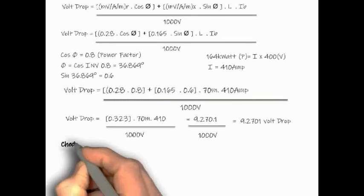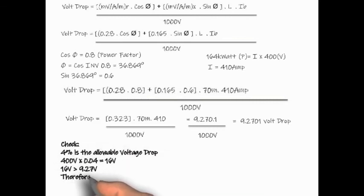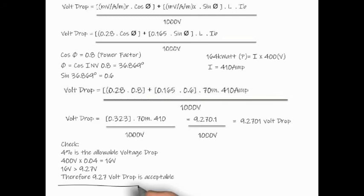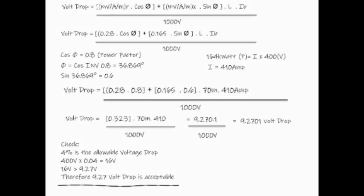So this is the voltage drop value that you have calculated. Now, how do I know whether this fulfilled the allowance for voltage drop? So I will use 400 volts multiplied by 0.04. This will give me 16 volts. So 16 volts is higher than 9.27 volts which I've calculated. Therefore, this value of voltage drop is acceptable.